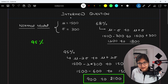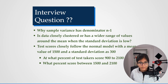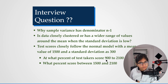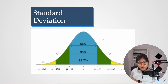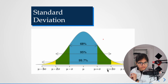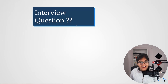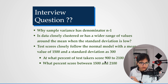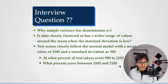So that is how we can utilize the standard rule of thumb. The range from 900 to 2100 corresponds to mu minus 2 sigma to mu plus 2 sigma, and we know that 95 percent of the data lies in that range. Therefore, 95 percent of test takers score between 900 and 2100.